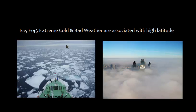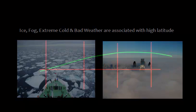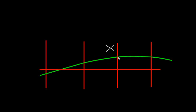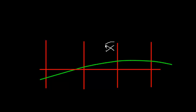Why should you know the position of the vertex? Ice, fog, extreme cold, and bad weather are associated with high latitude. So in case this is the area you want to avoid and you know the vertex where you will reach this latitude, you can modify the passage and can avoid this area.